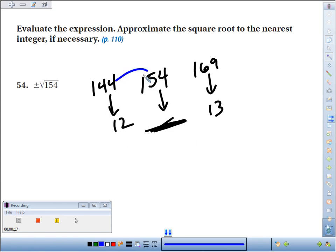Now, since 154 is a little closer to 144 than it is to 169, I'd estimate that the square root is going to be a little closer to 12.